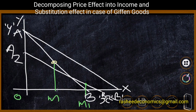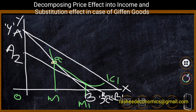Therefore, movement from M to M1 — that is OM to OM1 — is the substitution effect. To keep the consumer on the same level of satisfaction, we draw a single indifference curve IC1 which is tangent to both the income-price line AB at point A and to A2B2 at point B. Therefore movement from A to B is the substitution effect.